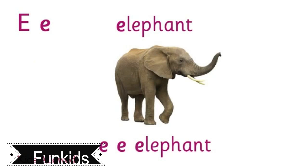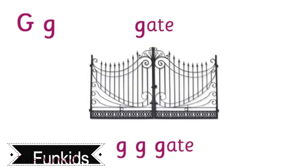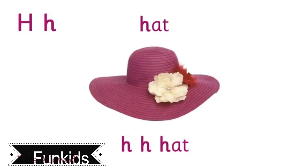E is for Elephants. E. Elephants. F is for Fish. F. Fish. G is for Gates. G.